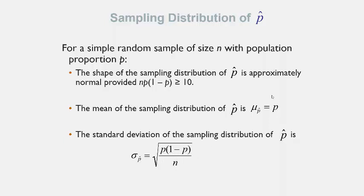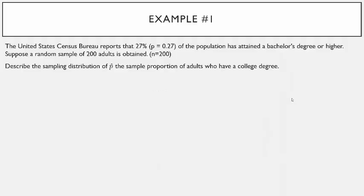Here's the first problem. The United States Census Bureau reports that 27% of the population has obtained a bachelor's degree or higher, so our population proportion p is 0.27. Suppose a random sample of 200 adults is obtained, so n equals 200.